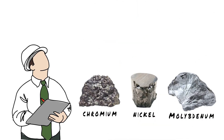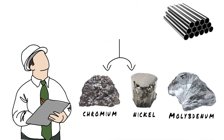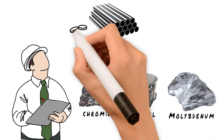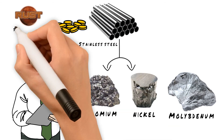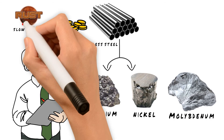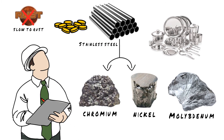For example, if you add chromium and nickel you get stainless steel. Stainless steel is very valuable because it is much more durable than standard steel, and it is slow to rust. Certain types of stainless steels are corrosion-resistant and hence are used to make utensils.